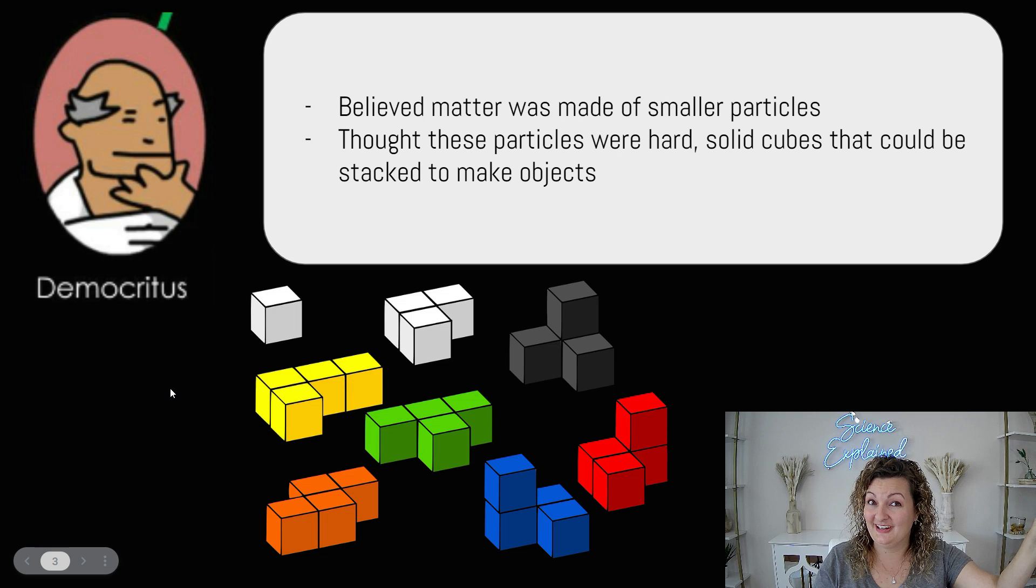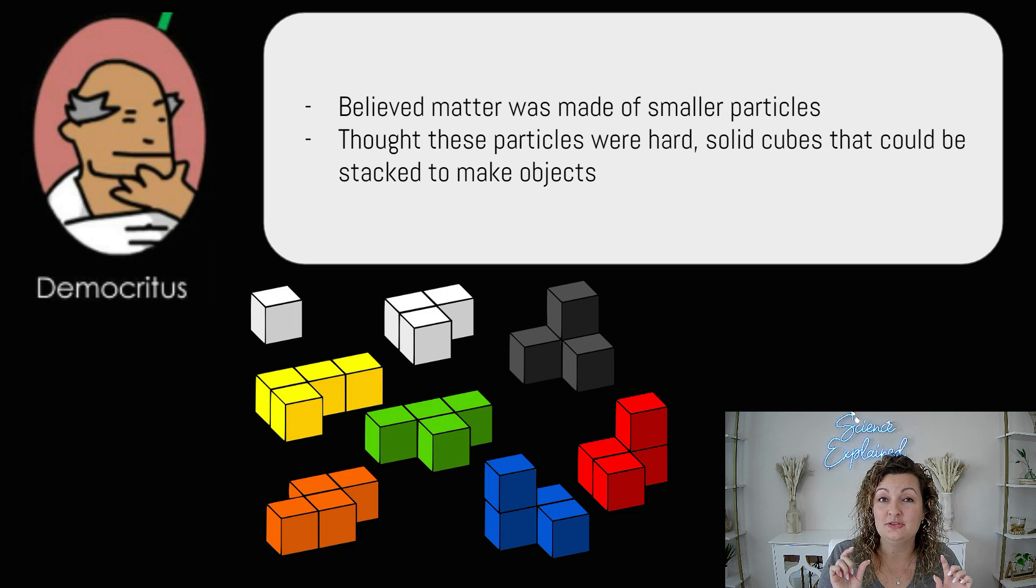Democritus is first, and this is way back when you guys. He believed that all matter was made up of small little particles and that they were in a cube shape. But this didn't really explain a lot of things because we have objects in this world that are not all angular. They don't all come to points of a 90 degree angle and we have things like gases, right? So it didn't work out.